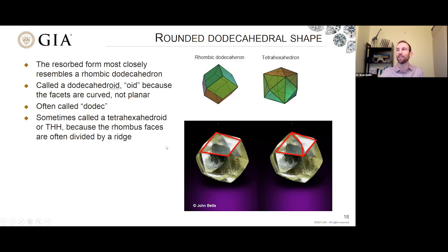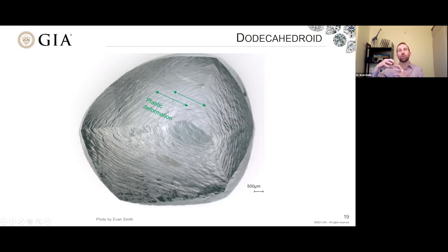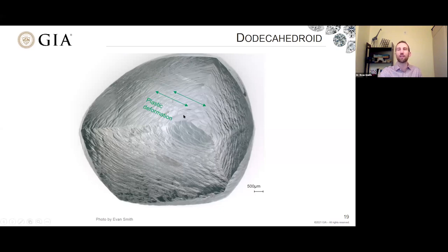Here's another dodecahedroid. This time it doesn't have those medial lines and has been resorbed into a shape bounded by rhombuses. We also see ridges on here — another feature exposed due to resorption of the crystal. These are plastic deformation lines, planes where the crystal has slipped a little because it's been deformed. While still hot in the mantle, diamond can squish a bit and doesn't behave as brittlely as at the surface. Resorption can cause the diamond to form this dodecahedroid shape but can also expose internal structures, manifested as these plastic deformation lines.